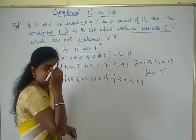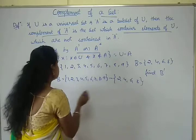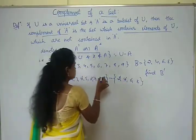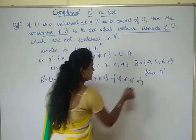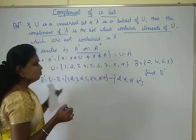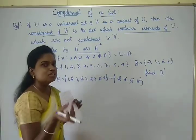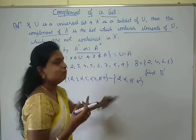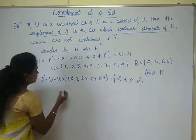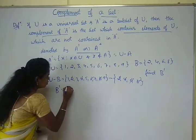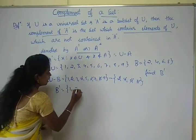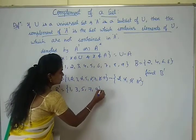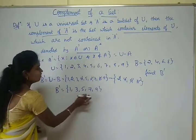B complement is the set of elements which are present in U but not in the set B. So what are the remaining elements? B dash is equal to {1, 3, 5, 7, 9}. Complement means which are present in the universal set but not in the given set.